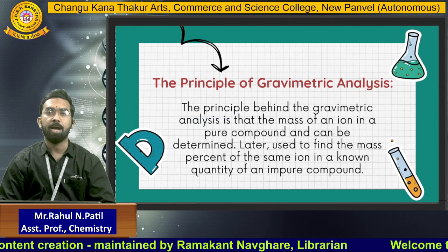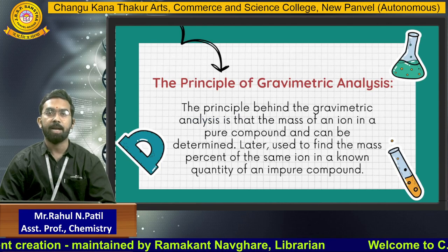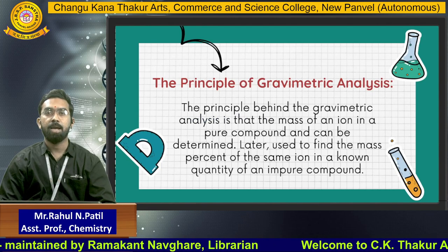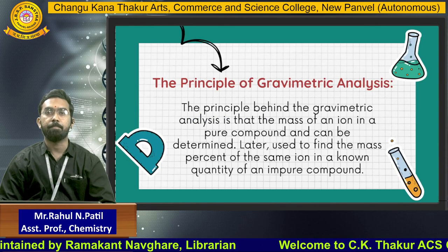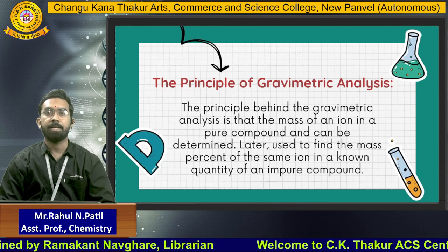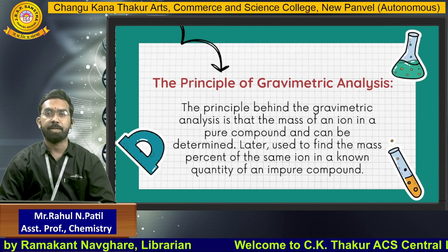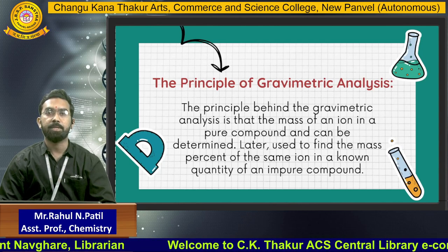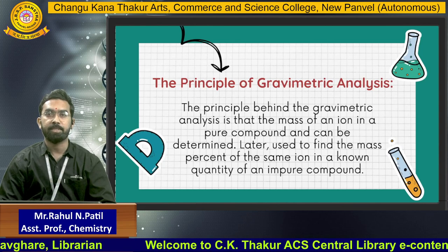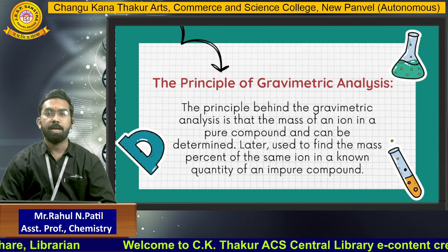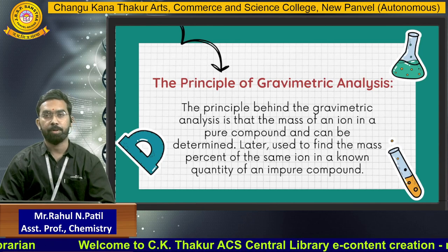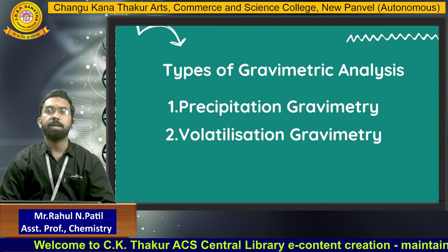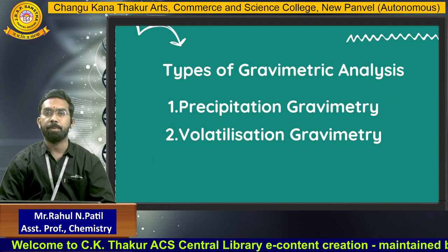The principle behind gravimetric analysis is that the mass of an ion in a pure compound can be determined, then used to find the mass percentage of the same ion in a known quantity of an impure compound. Now, the types of gravimetric analysis.